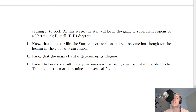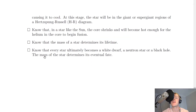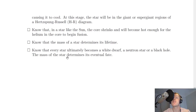In a star like the Sun, the core shrinks and becomes hot enough for helium in the core to begin fusion. The mass of a star determines both its lifetime and its eventual fate. Small mass stars similar to the Sun eventually become white dwarfs. Stars of larger mass than the Sun become neutron stars. Stars of even larger mass — around four to eight solar masses — are expected to eventually become black holes.